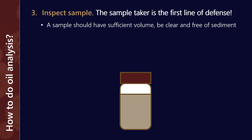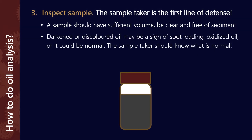The sample needs to have a couple of things: we need sufficient volume so that we've filled to the correct fill line on the bottle, and the oil itself should be relatively clear and free of sediment. If we see darkening or discoloration, that could be a sign of soot loading, or oxidized oil, or it could be normal. For example, in certain turbine oils, antioxidant additives can change color in use, and that's perfectly normal. This is a great reason why the sample taker should also be consistent, because they're going to know what is normal for that equipment. And if they start to see something abnormal, that might be something they flag to the maintenance team.